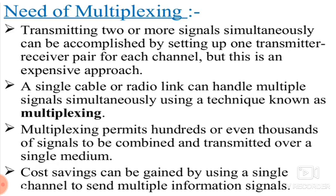TDM is used to reduce the bandwidth, since multiple signals occupy a single channel. Transmitting one or more signals simultaneously can be accomplished by the TDM process. A single cable or radio link is enough to handle multiplexing. This permits hundreds or even thousands of signals to be combined through a single channel, saving cost.